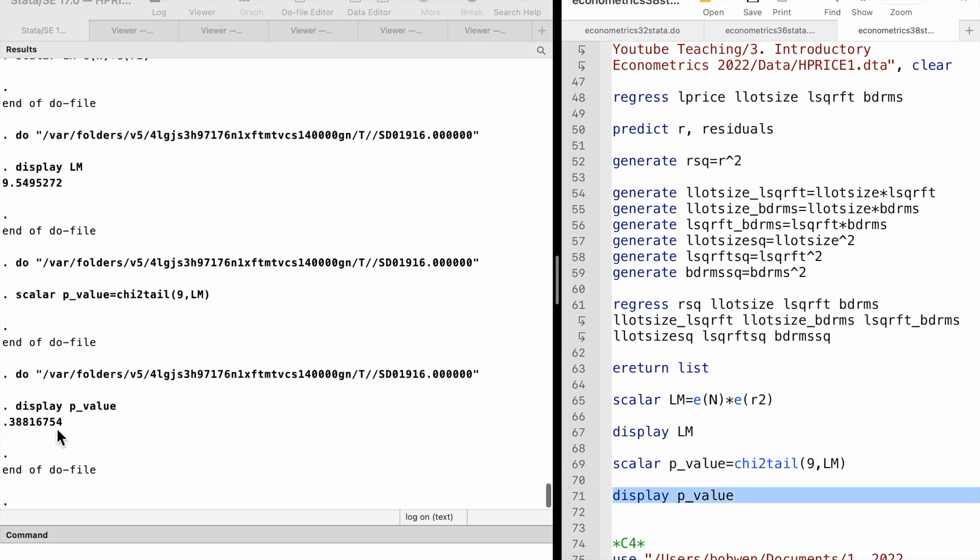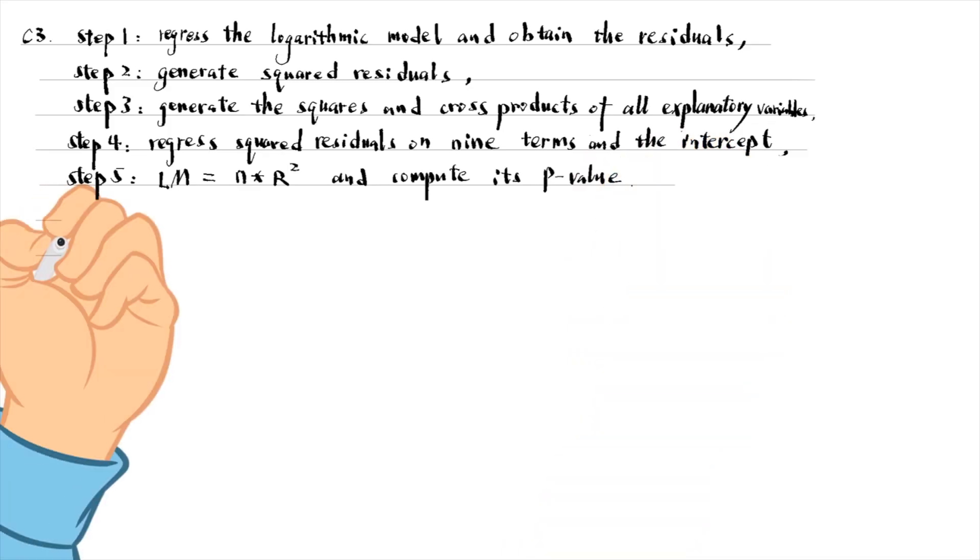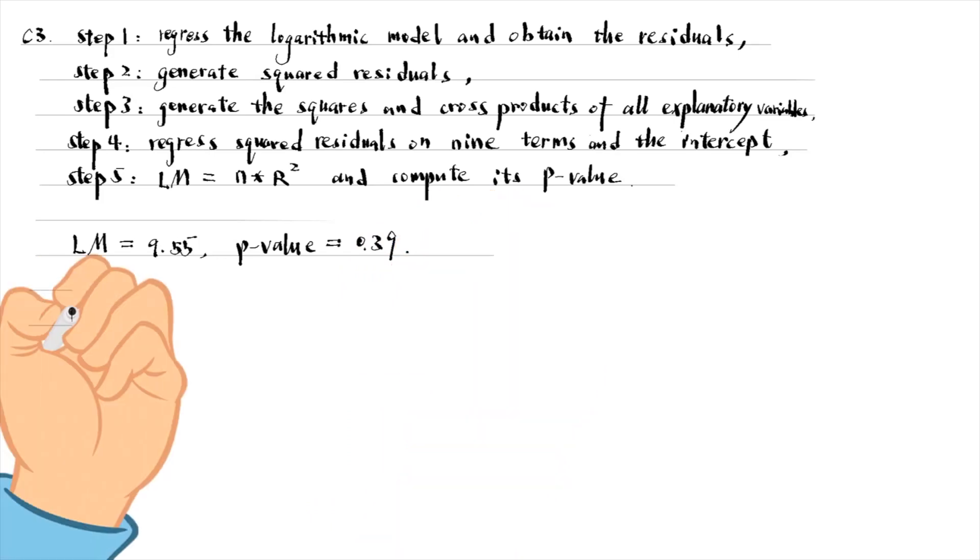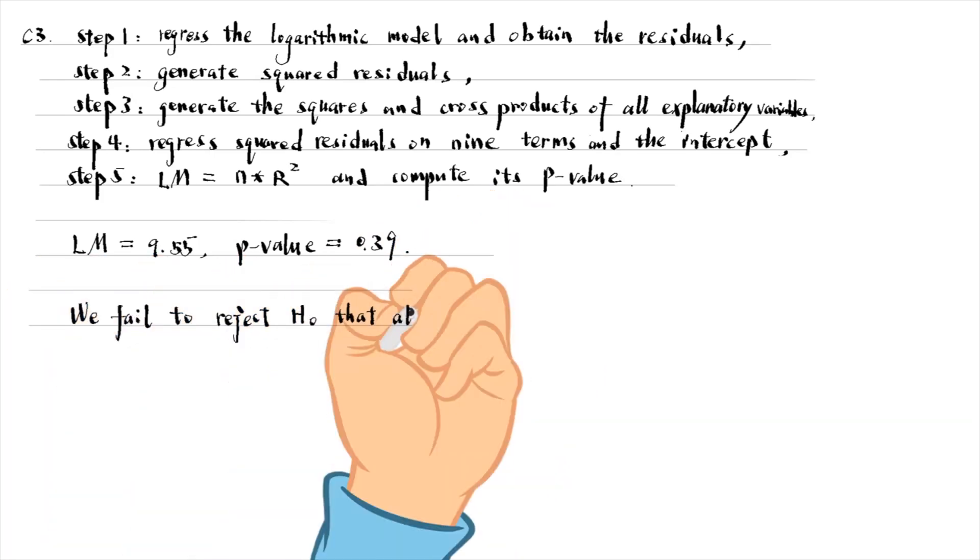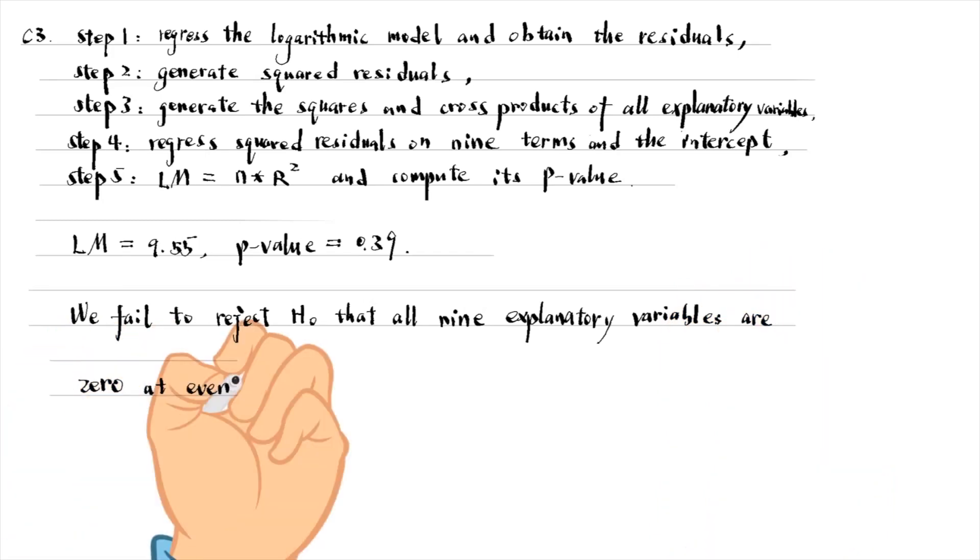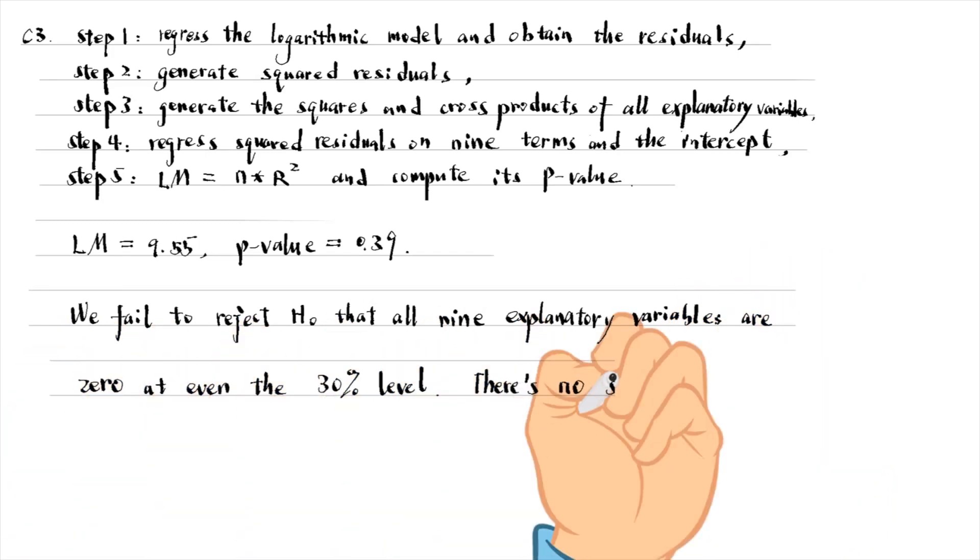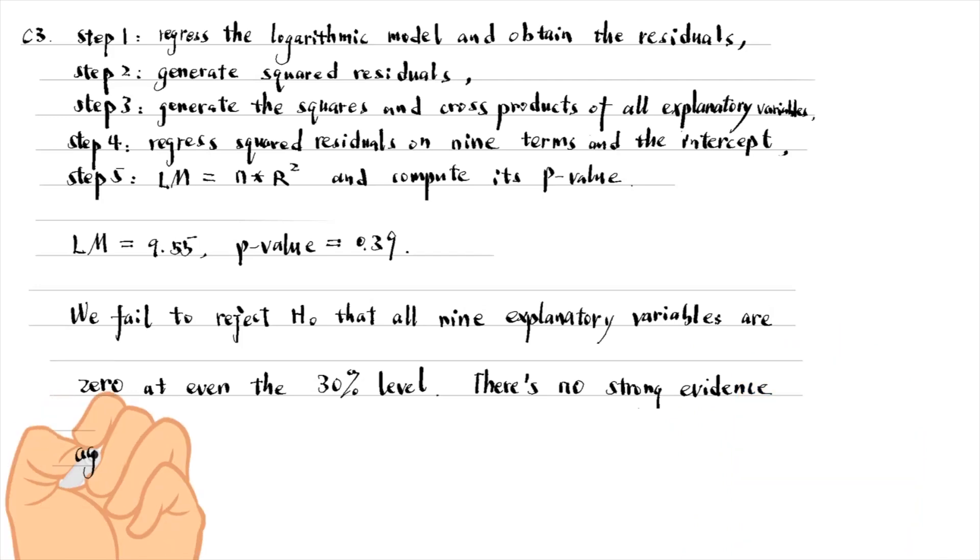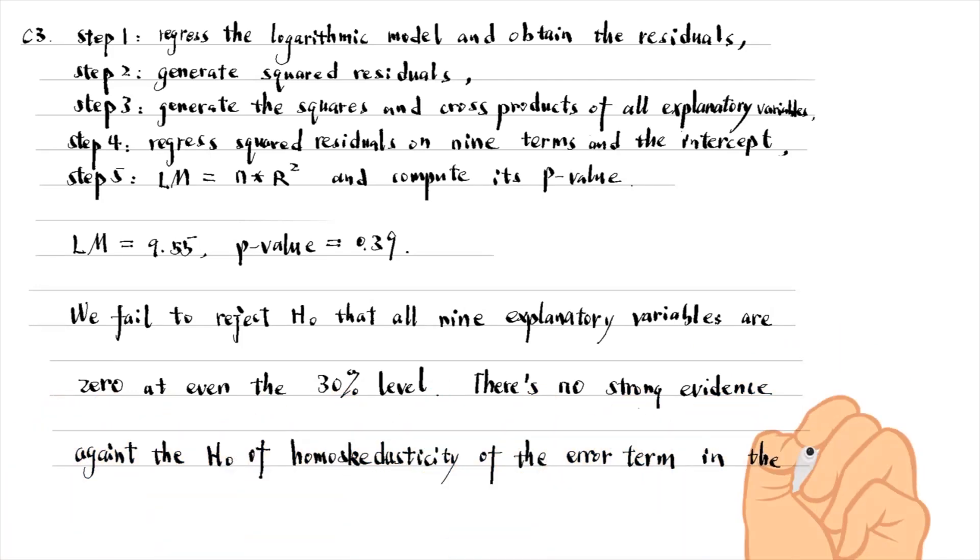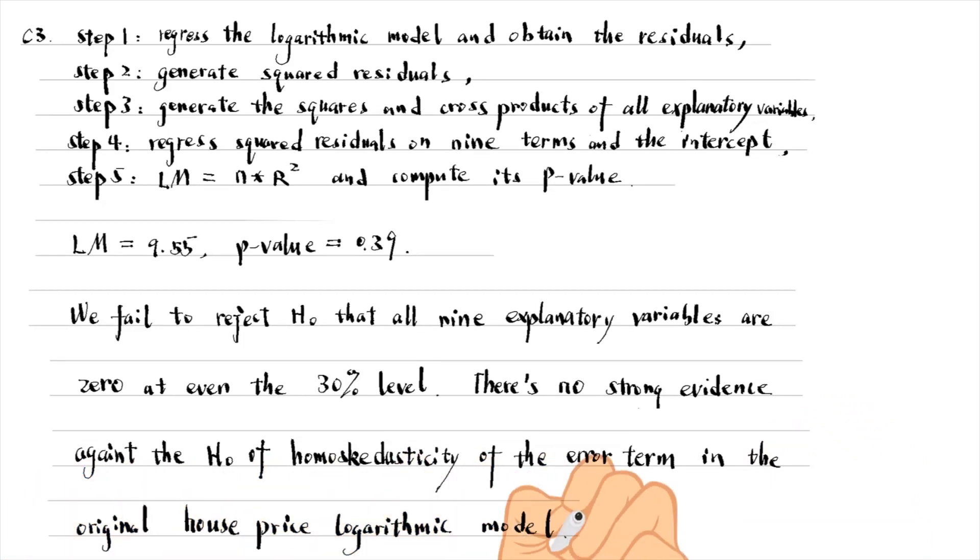It is 0.39. It suggests that we fail to reject the null hypothesis that all the explanatory variables in the White test are zero at even the 30% level. In other words, there is no strong evidence against the null hypothesis of homoscedasticity of the error term in the original house price model.